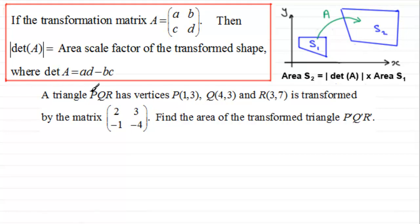We've got a triangle here, PQR, and it has vertices P at (1,3), Q at (4,3), and R at (3,7). And it's transformed by the matrix [2, 3; -1, -4]. And what you've got to do is find the area of the transformed triangle P'Q'R'. Okay, well, if you'd like to give this a go, just pause the video, come back when ready, and you can check your work solution with mine.